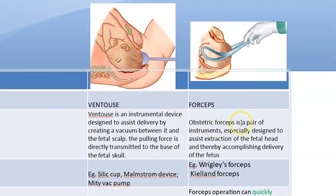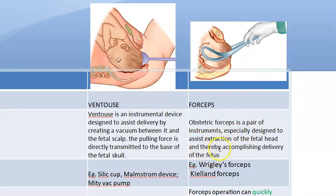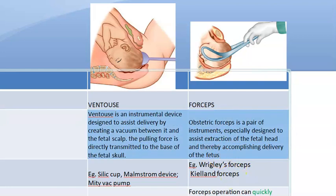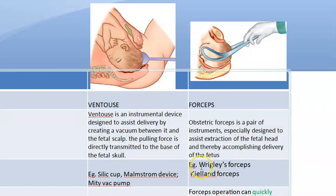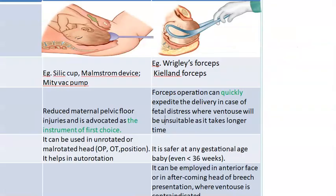Coming to forceps - forceps is a pair of instruments, a metallic instrument designed to extract the fetal head and thereby accomplish delivery of the fetus. One thing to understand: both instruments are not only for vaginal delivery - you can even use them in cesarean. Examples of forceps are Wrigley's forceps, Kielland forceps, etc. You will have to read about each of these individually.